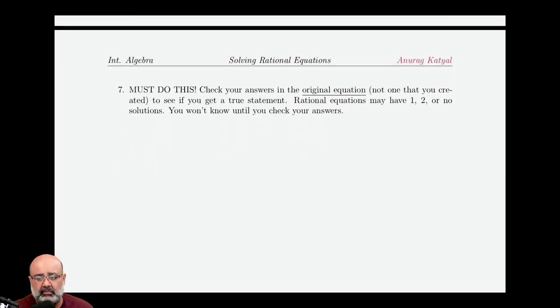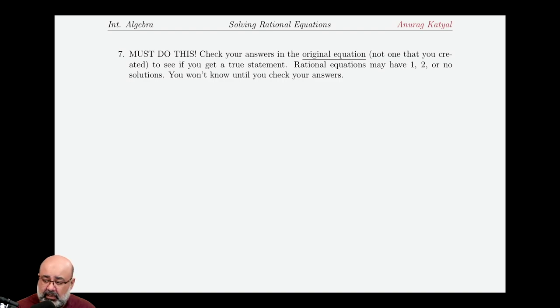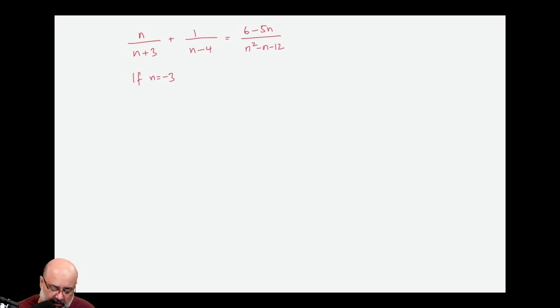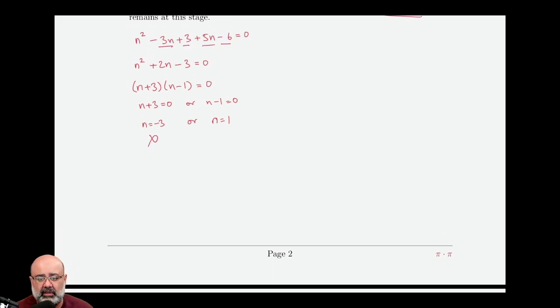And how do we know if they're solutions? We have to plug them in. So the original equation is n over n plus 3 plus 1 over n minus 4 equals 6 minus 5n over n squared minus n minus 12. So if n is equal to negative 3, that's our first potential solution, we get negative 3 over negative 3 plus 3. And immediately we have to hit the pause button because negative 3 plus 3 is equal to 0. We're not allowed to divide by 0. So immediately we know n equals negative 3 will never be a solution.